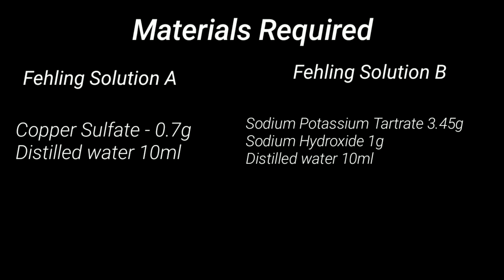Fehling's reagent is composed of two separate solutions labeled as Fehling A and B. Fehling A is a copper sulphate solution, while Fehling B is a solution of sodium hydroxide and sodium potassium tartrate.